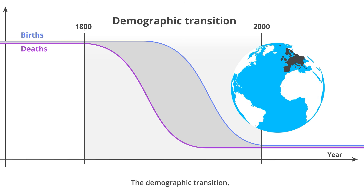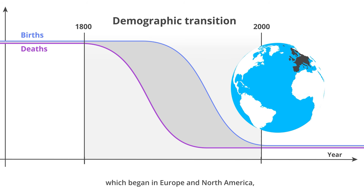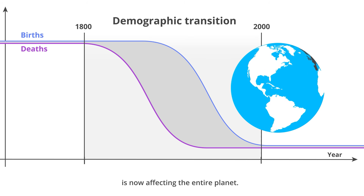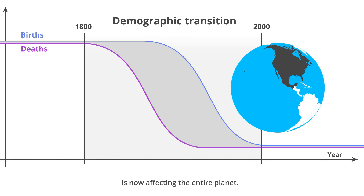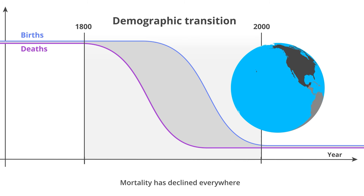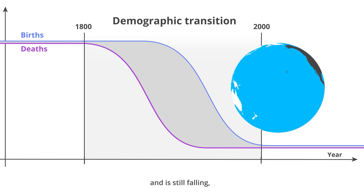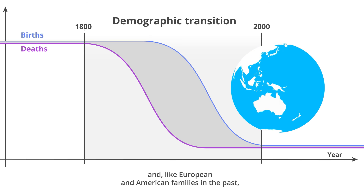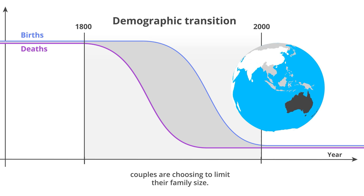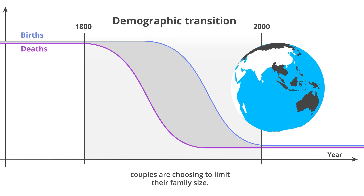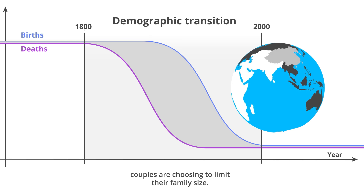The demographic transition which began in Europe and North America is now affecting the entire planet. Mortality has declined everywhere and is still falling, and, like European and American families in the past, couples are choosing to limit their family size.